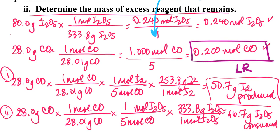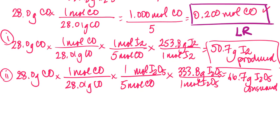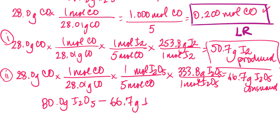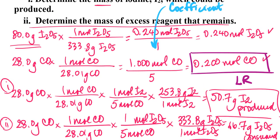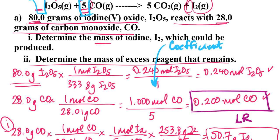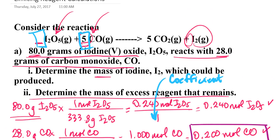If you recall, I started with 80 grams of iodine 5 oxide. So I'm going to take the 80 grams of the iodine 5 oxide that I started with, subtract from it the 66.7 grams of the iodine 5 oxide that were consumed according to my calculations, and I get 13.3 grams of the iodine 5 oxide remaining. Essentially, figuring out the amount of excess reagent is just running another stoichiometric calculation — except instead of calculating the amount of product, you calculate how much of the other reactant was consumed given the amount of the limiting reagent.